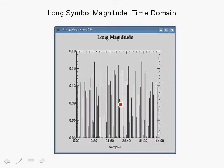If we compute the magnitude of the long symbol, we see that it's symmetrical about the 32nd sample, which is to be expected. And you can use this sequence here to actually identify the long symbol.